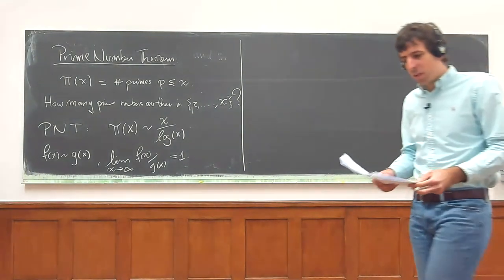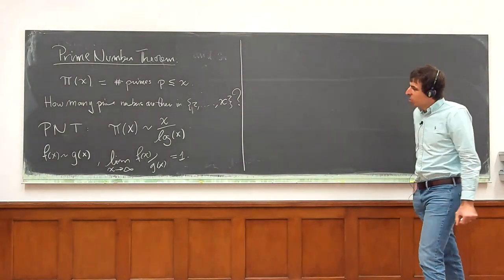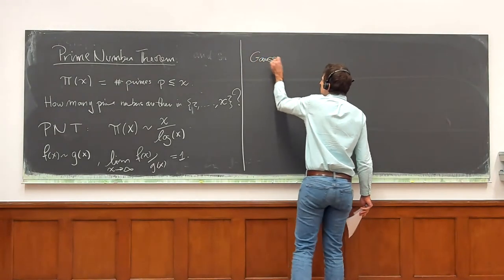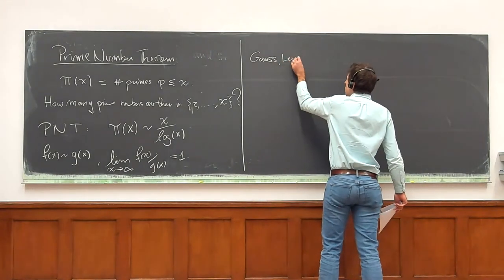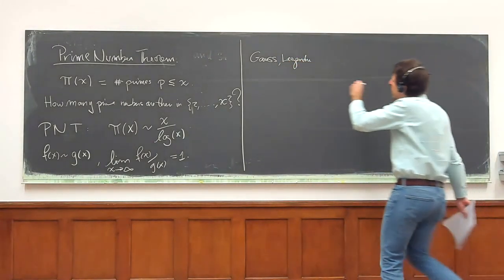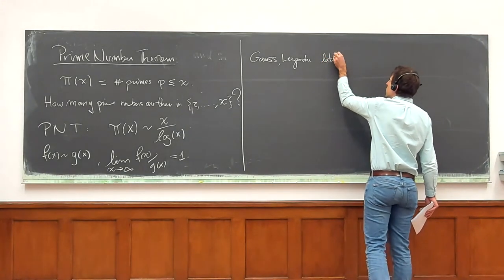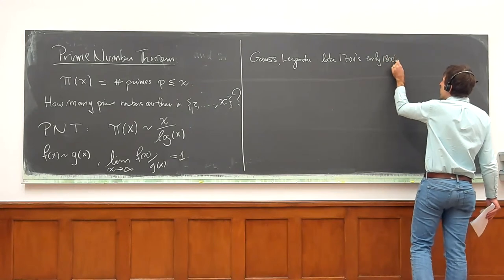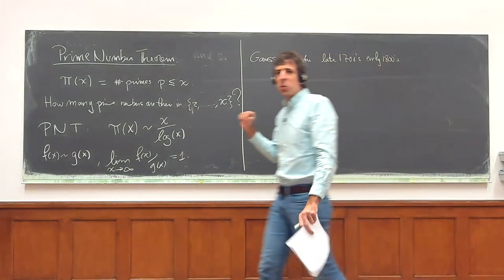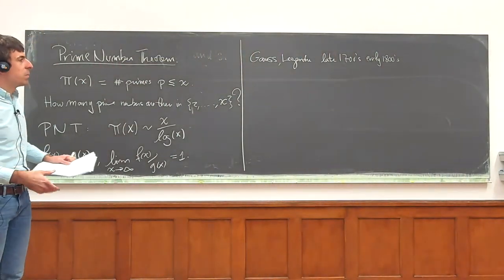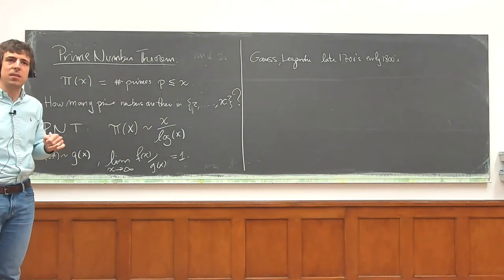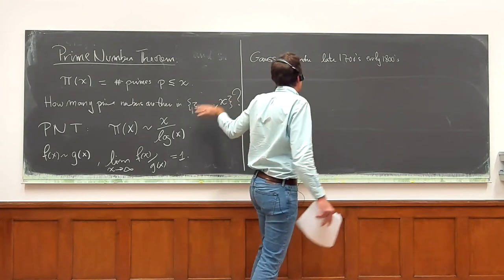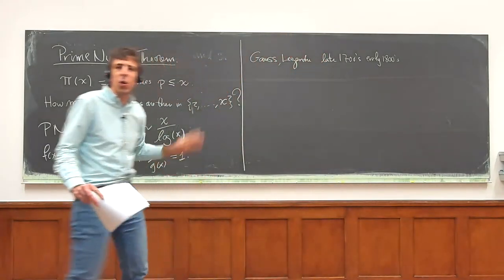This was first observed — people have been looking at primes for millennia — but this was first observed, as far as we know, by people like Gauss and Legendre, somewhere in the late 1700s and early 1800s. They sort of independently — I think Gauss had done some calculations but didn't communicate to anyone. Then Legendre wrote a monograph in which he talks about this, and then Gauss pointed out that he had done some of these calculations before, maybe around 1790-something and 1800-something.